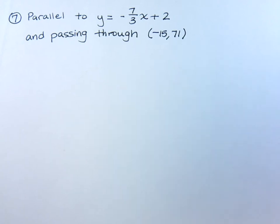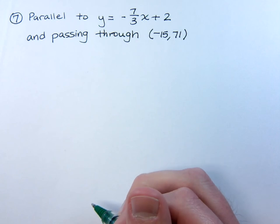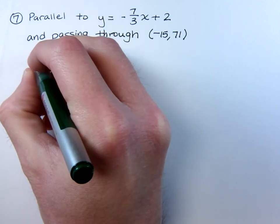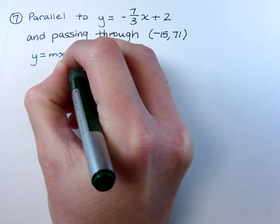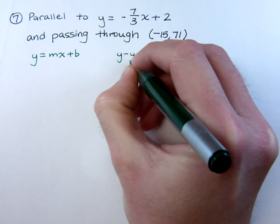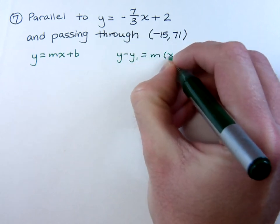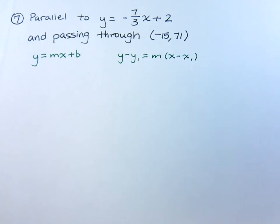Remember that when we were trying to write the equation for a line, we need two things. We need a slope and we need a point that we go through. Now we have two formulas that we can use. We have the slope intercept form and we also have the point slope formula. It doesn't matter which one we use, just as long as you pick one and stick with it.